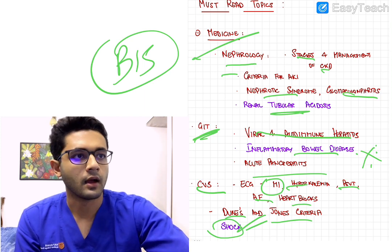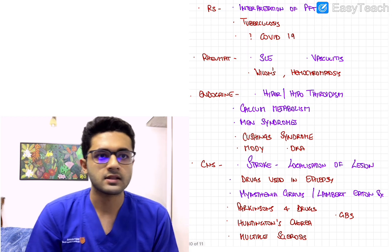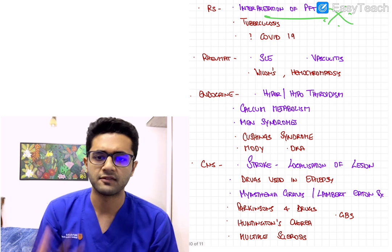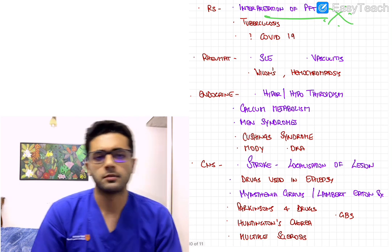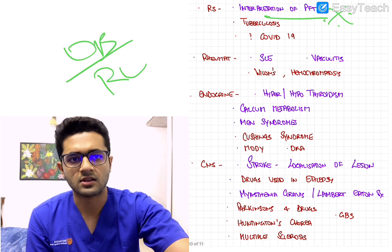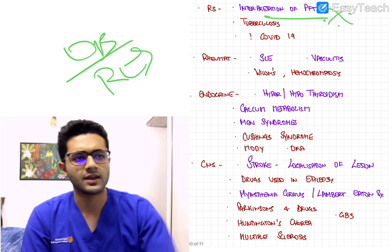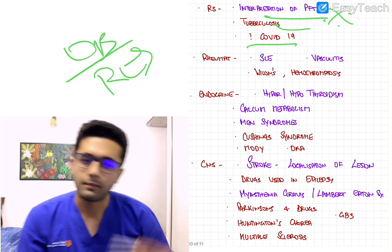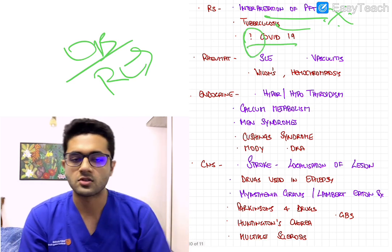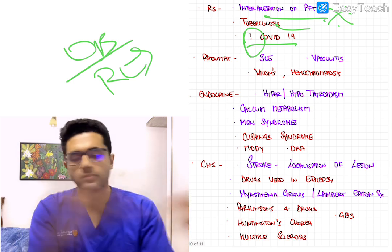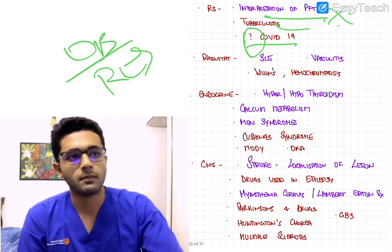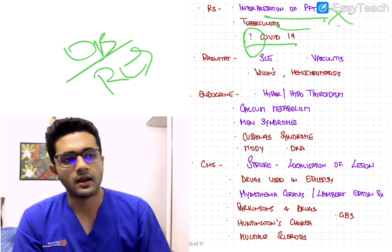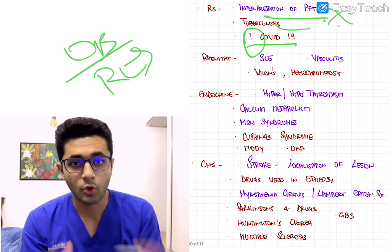Next is the respiratory system. The most important must-know topic here is the interpretation of PFTs — knowing how to differentiate between obstructive and restrictive airway disease. Bronchial asthma is very important and frequently asked, along with TB. COVID-19 will probably be asked too, though I've put a question mark since when we prepared there was no COVID-19. Interpretation of PFT is a definite question — some obstructive versus restrictive question is going to come your way.